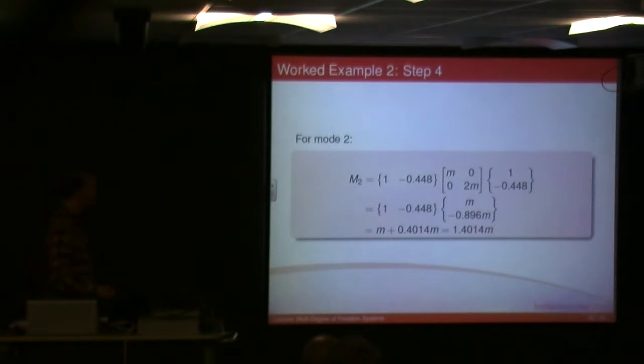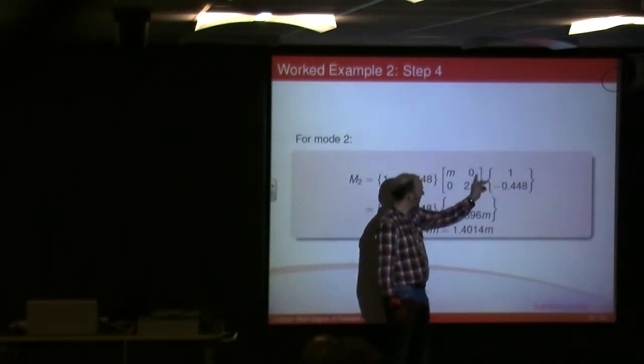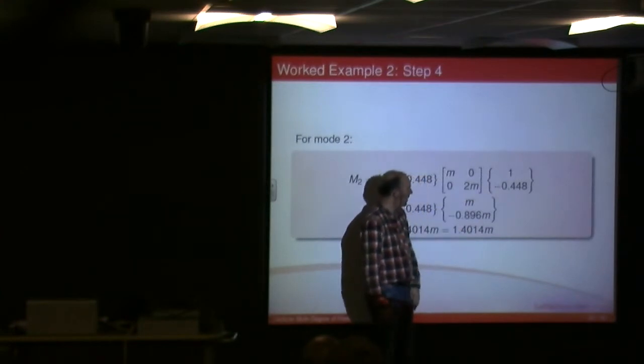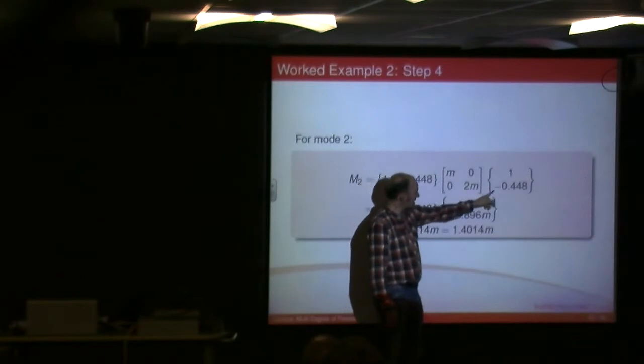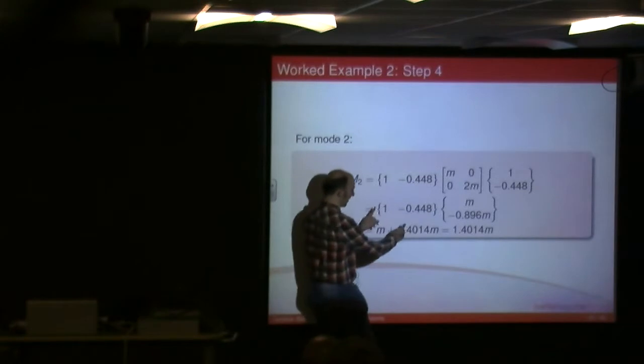For mode 2, I do the same thing. m times by 1. m times by 1 plus 0 times by minus 0.448 is going to be obviously m. And then here I've got 2 times by minus 0.448, so I get minus 0.896 times by m. And again I go through the process.